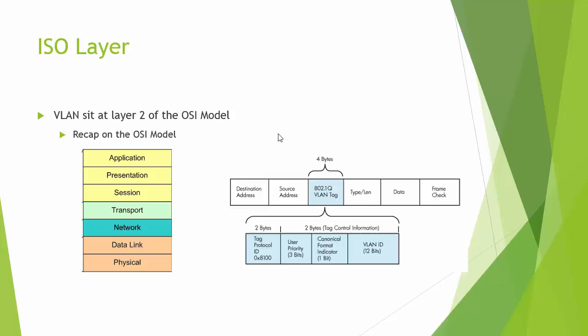So how do VLANs work? VLANs sit at Layer 2 of the OSI model. As a quick recap — we have the seven layers: the physical layer, then the data link layer, which is where VLANs sit. This is what we refer to as a frame. A frame will encompass a particular protocol, and in the context of IP traffic, the data frame will encompass the IP packet.